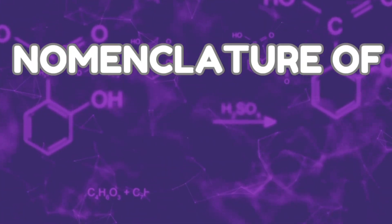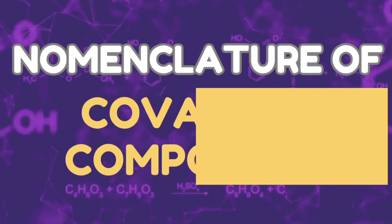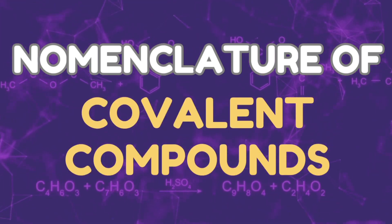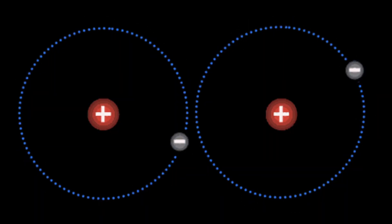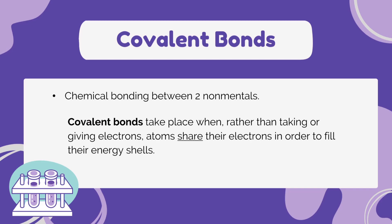A covalent bond happens between two nonmetals. It happens when two nonmetals tend to share their electrons in order to fill their outermost shell, or to achieve atomic stability.